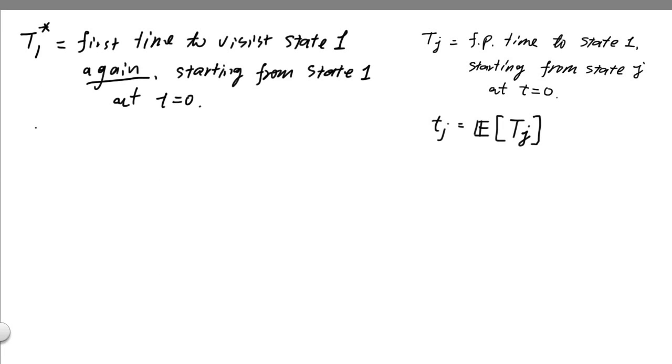Same as before, we'd like to calculate the expected time to revisit state one. Define little t1 star as the expected value of t1 star. And we'll be using the same recurrence trick through the following equation. Then we say that t1 star is equal to 1 plus summation j from 1 to 2. Now since we started from state one, this goes from 1 to state j, p1j and tj.